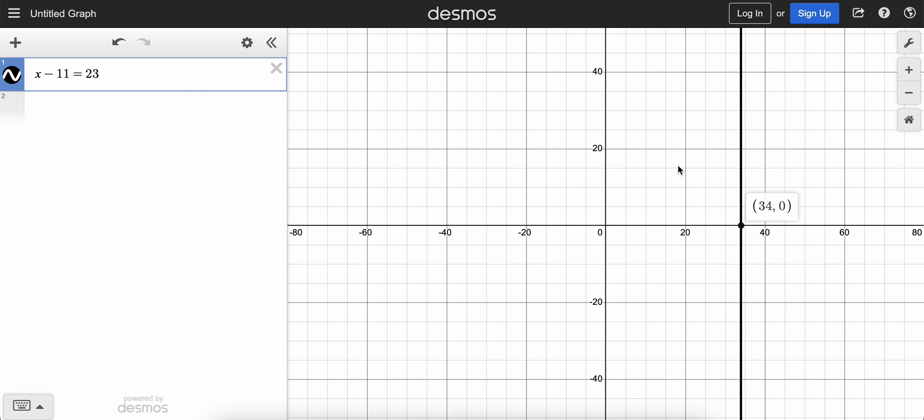Notice that Desmos shows you the solution by drawing a vertical line through the solution on the x-axis. So x is 34. If this had been y instead of x, watch what it would do. It would draw a horizontal line through the y-axis at 34. Same idea.